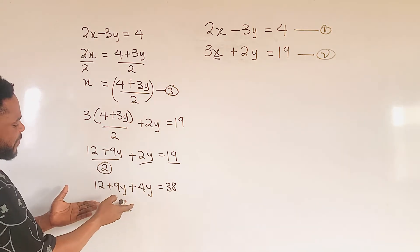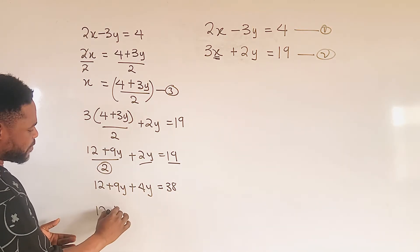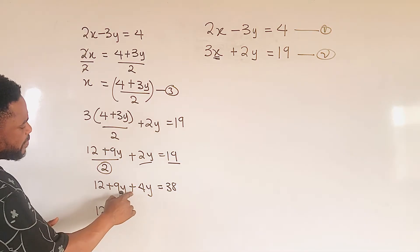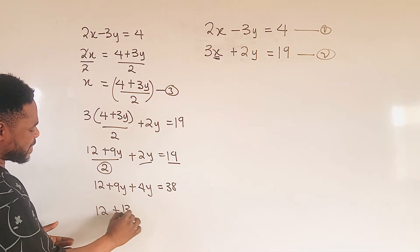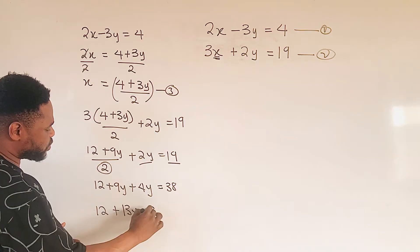Now, we simplify this as 12 plus, that is 9y plus 4y, will give us 13y, equal to 38.